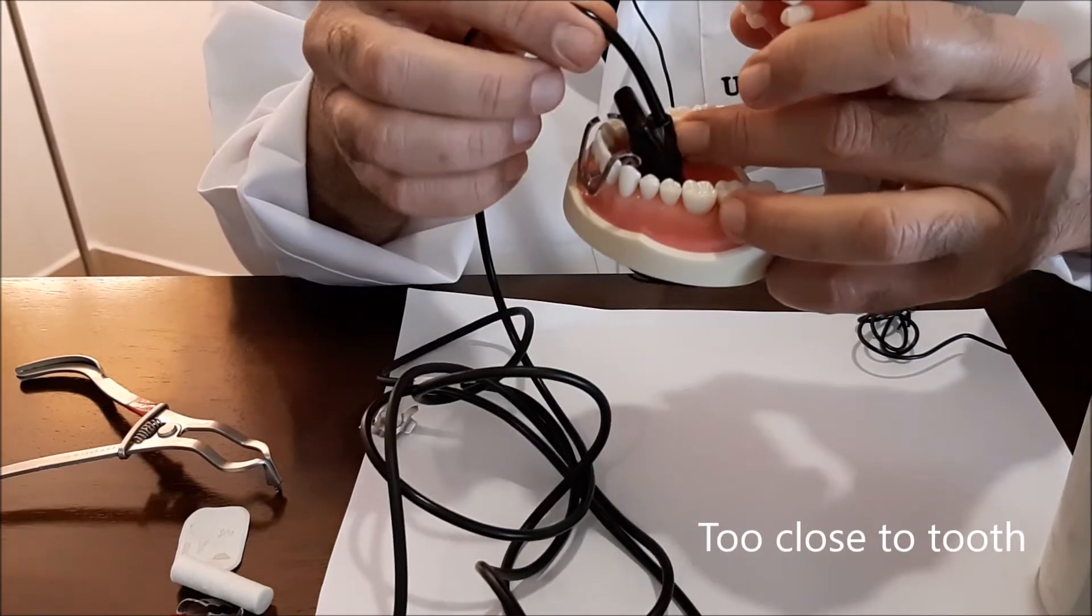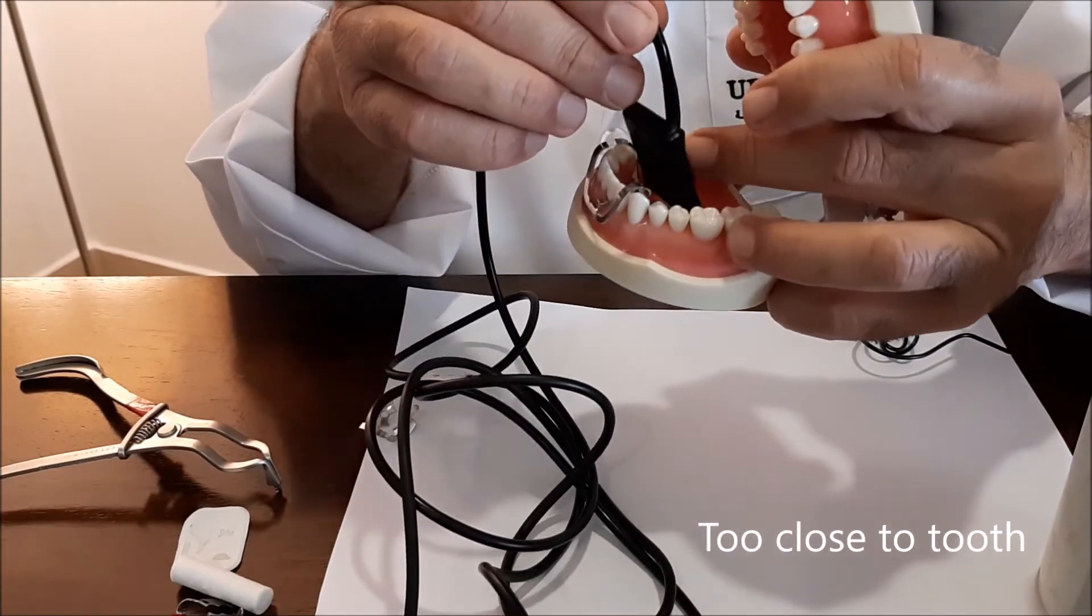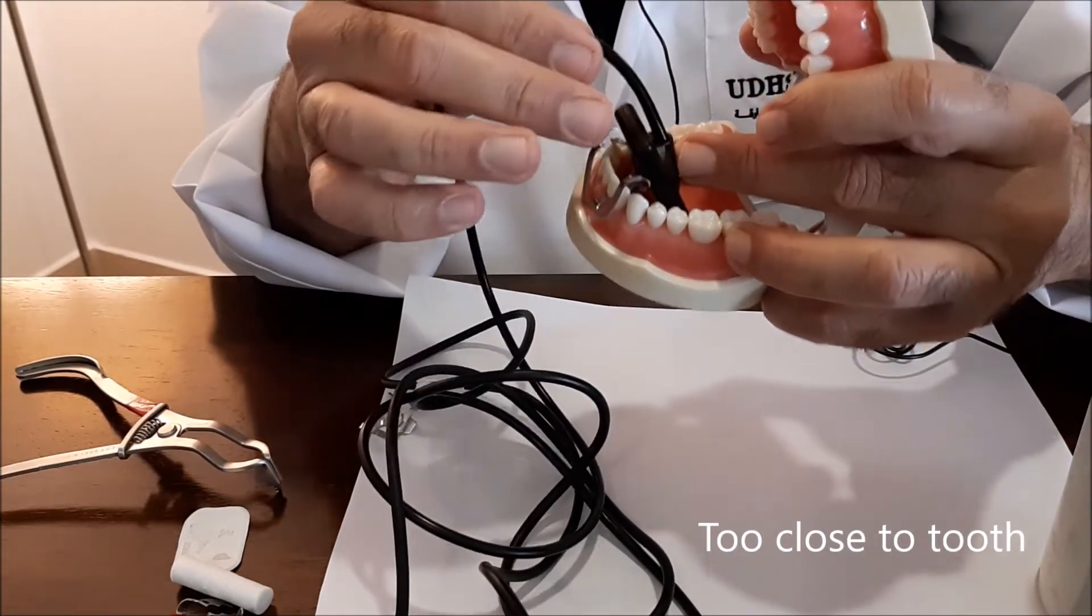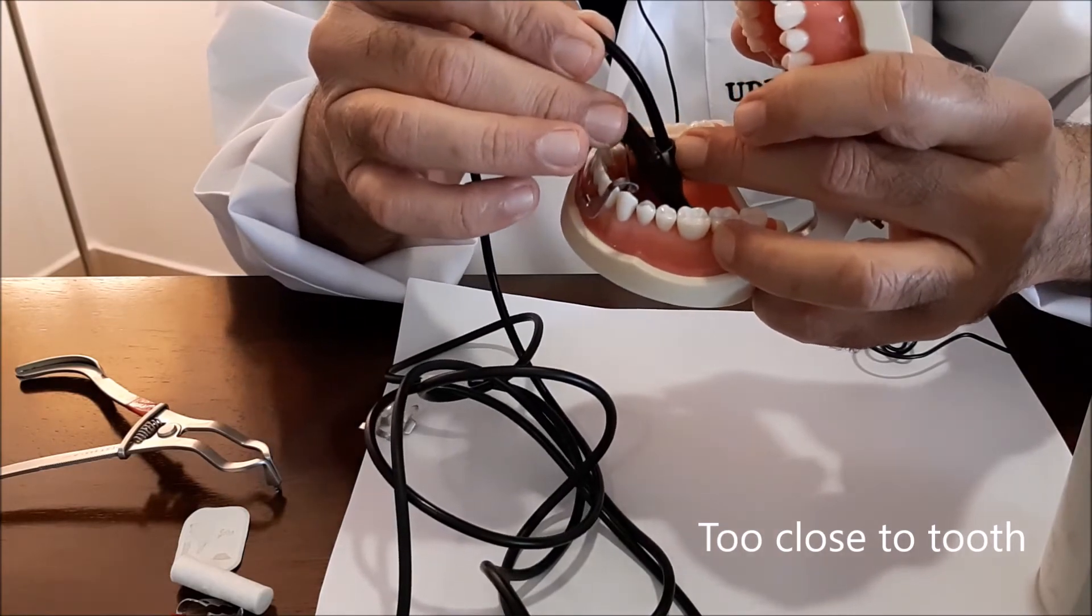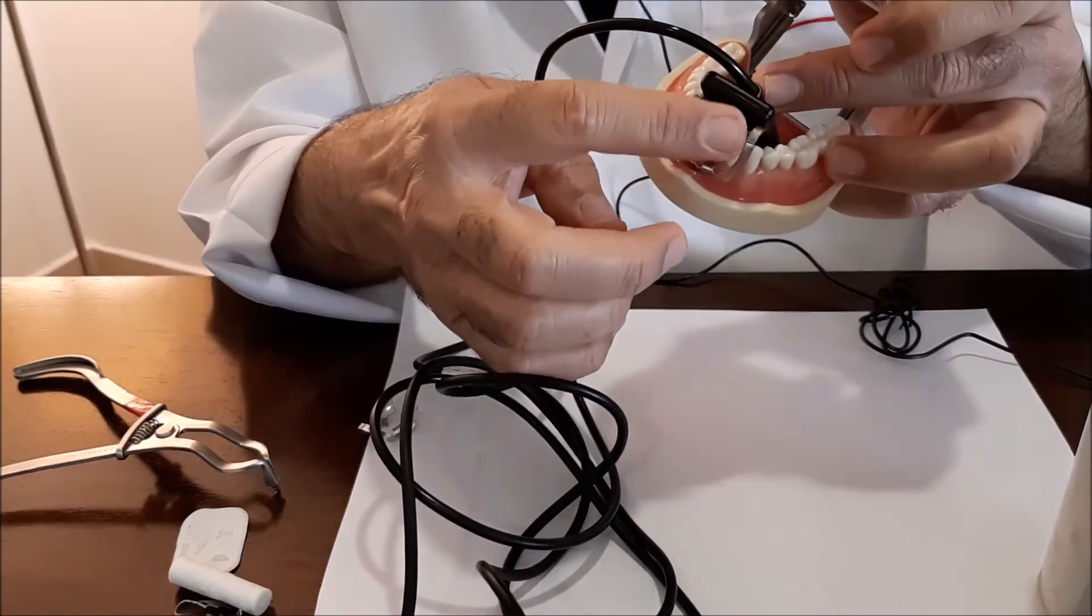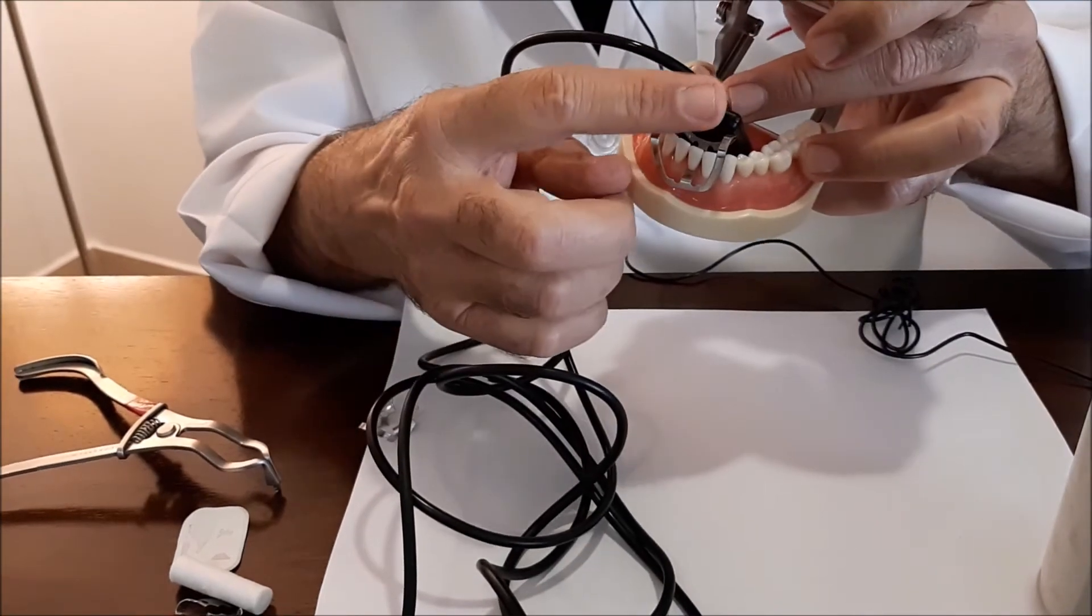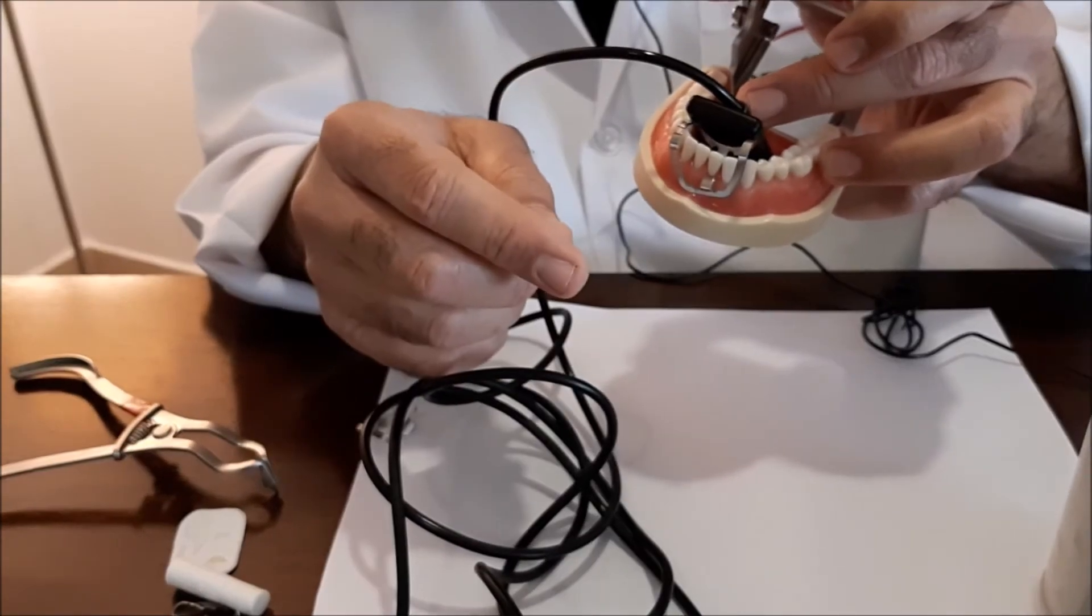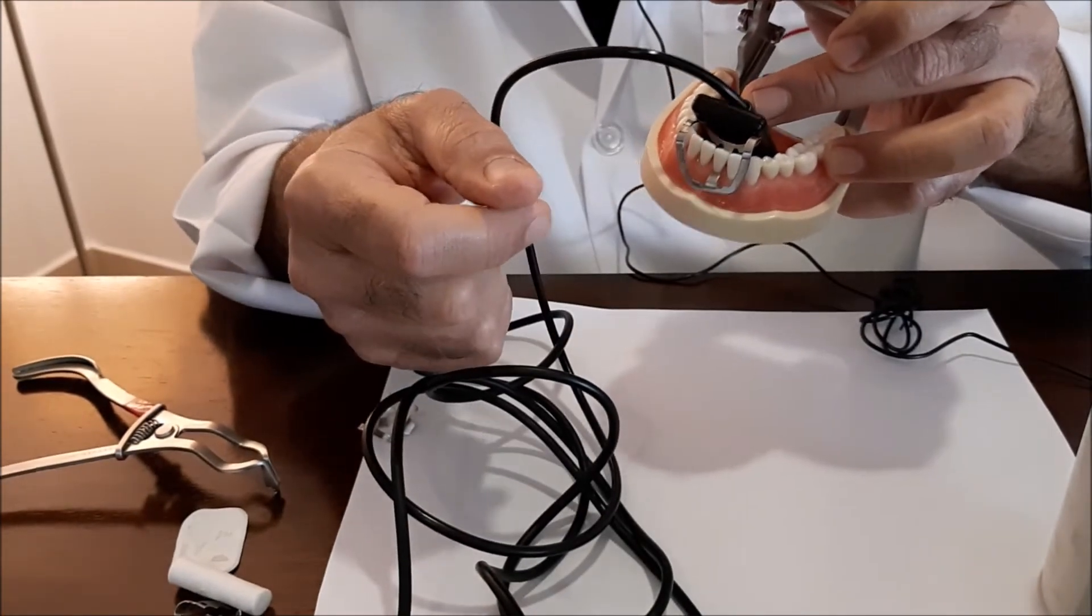If you bring it too close to the film, you will miss the apex. But what you do is that you push it backwards and you incline it. Now, you have reduced this free margin extending of the film above the teeth.